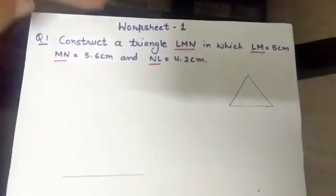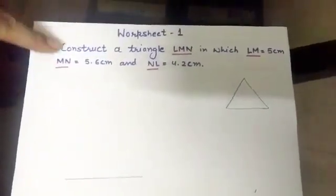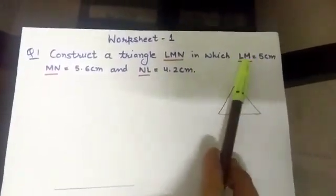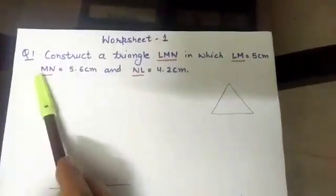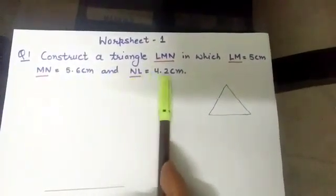Now, coming to worksheet 1 of chapter 10. First question. Construct a triangle LMN in which LM is 5 cm, MN is 5.6 cm and NL is 4.2 cm.